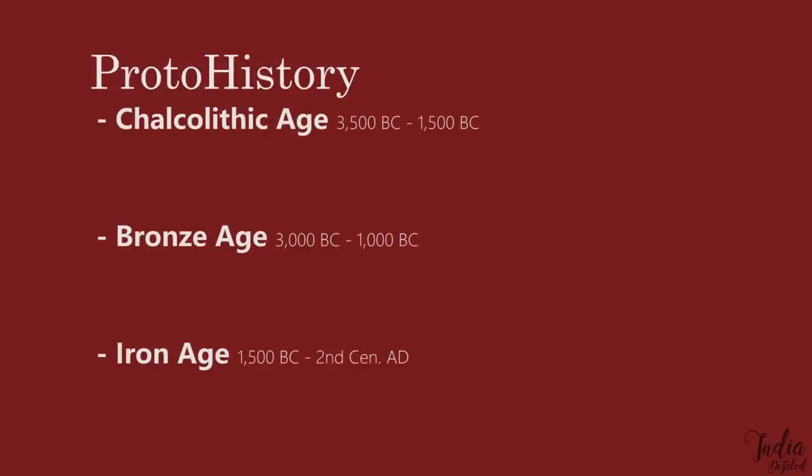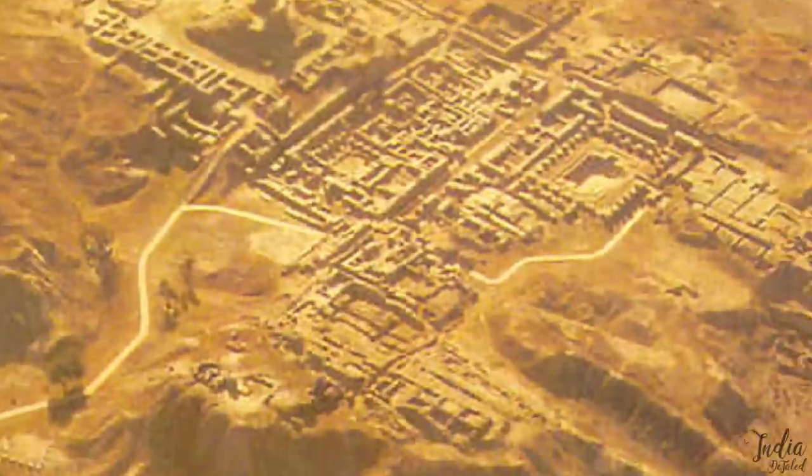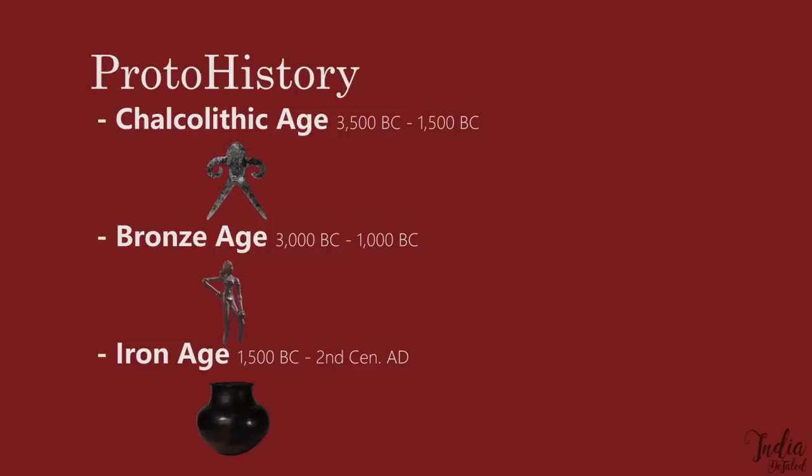Next, the Proto-Historic period is classified into three parts based on the metals used. First, the Chalcolithic, or the Copper age. Then the Bronze age, when some pretty cool cities were built. And the Iron age, which began in the Proto-Historic period.